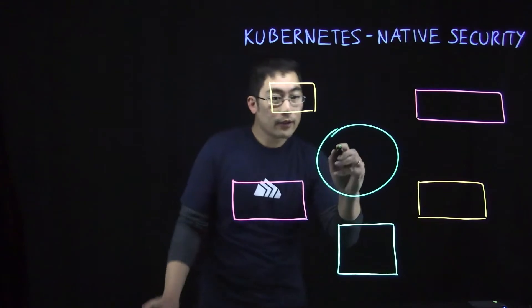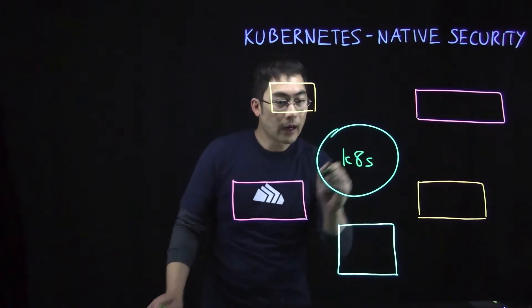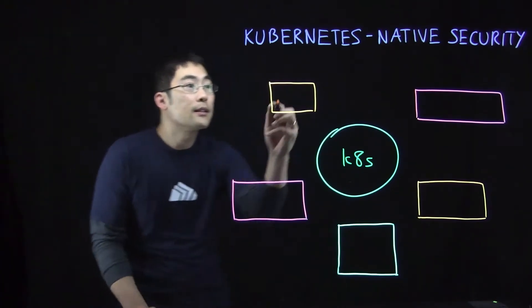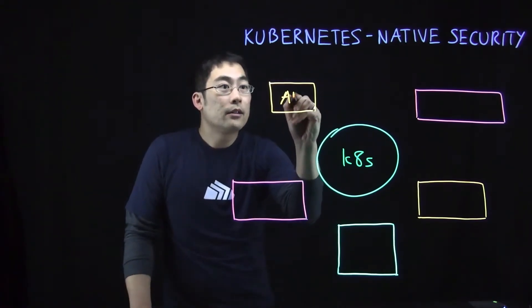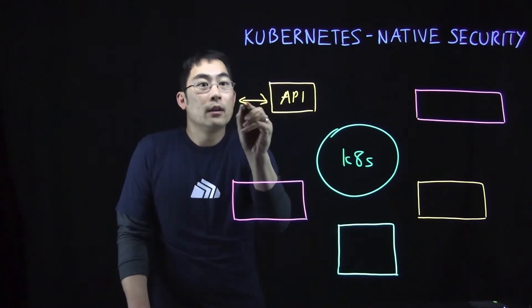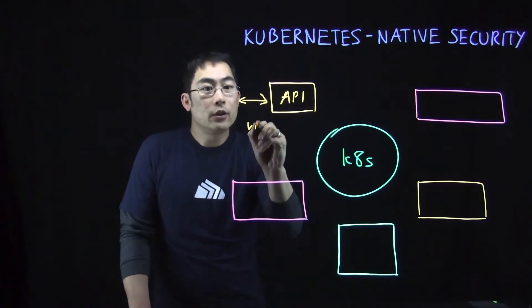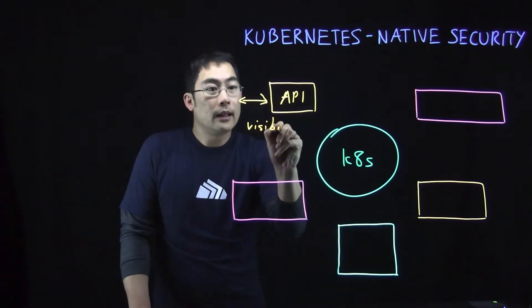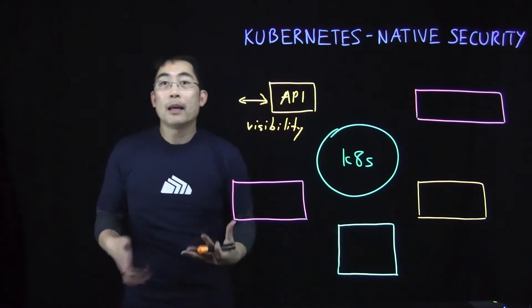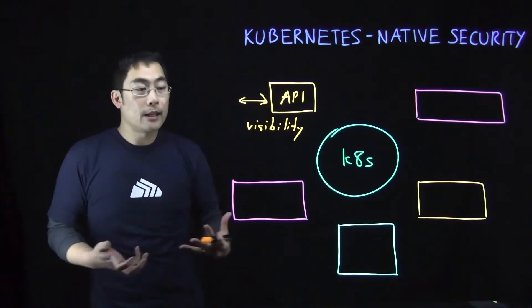If you have Kubernetes at the center of your environment, the first criteria for the solution is that it directly integrates with the Kubernetes API. This gives you first-hand visibility into what's going on within your Kubernetes clusters. You get a comprehensive picture of everything happening within Kubernetes itself.